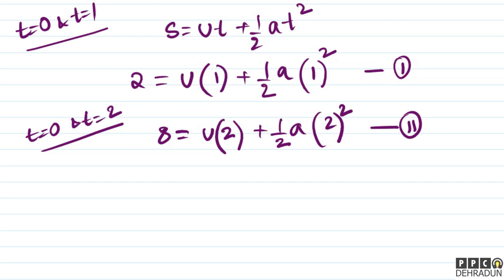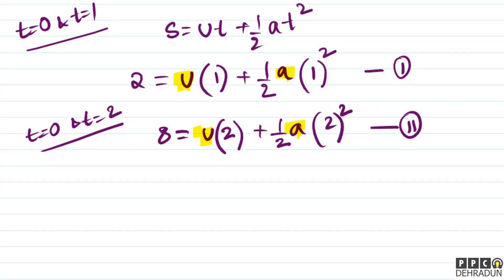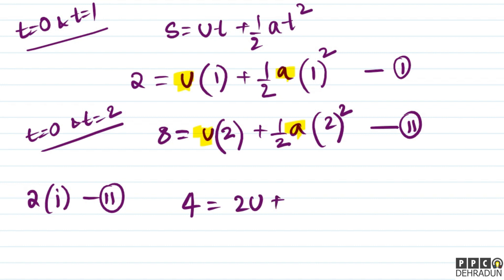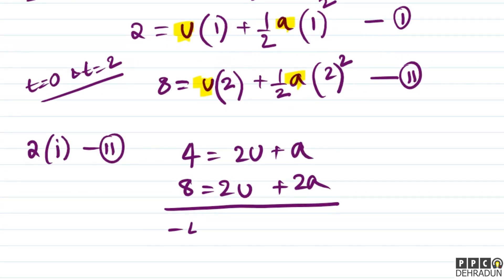We now have two equations and two unknowns — u and a. To solve them, I will multiply the first equation by 2 and subtract it from the second equation. This will cancel out u. So: 8 = 2u + 2a, and subtracting gives us: minus 4 = minus a.